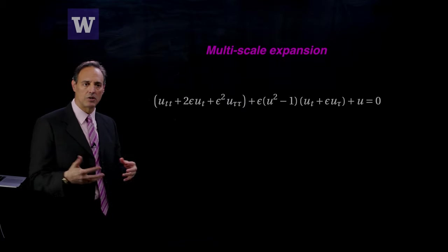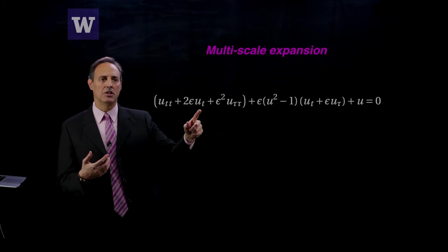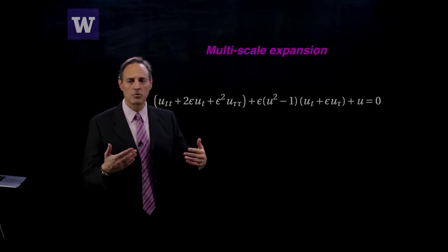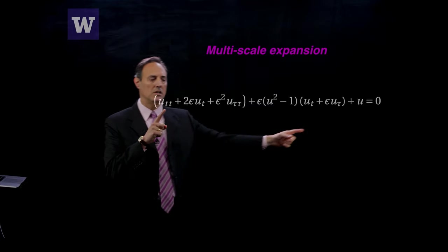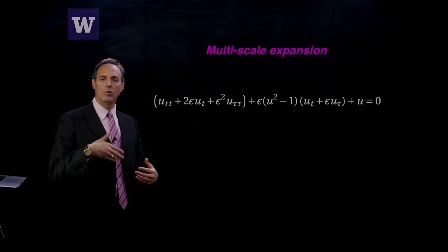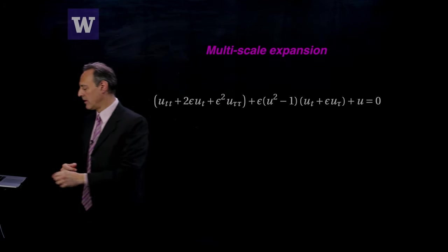It's a function of those two scales. You'll notice epsilon appears here, there's an epsilon squared here. The only terms without an epsilon are u_tt and u. So the leading order solution is only a function of the t scale, and that's going to be important in how we do this.